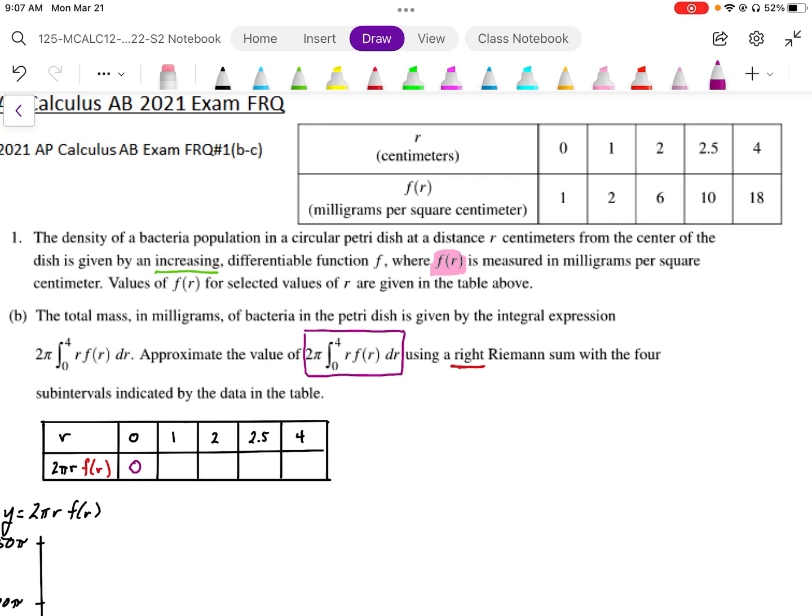Filling out the rest of this table, when r is equal to 1, 2π r is going to be 2π and f(r) is 2, so we end up with 4π.